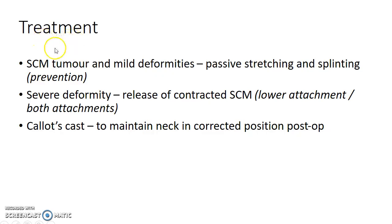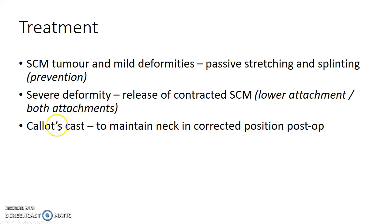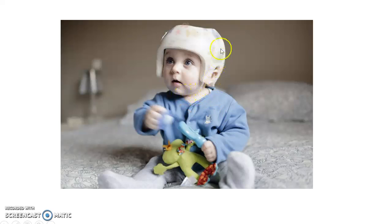For treatment of congenital Torticollis: when the child presents in the first few weeks of life with a sternocleidomastoid tumor or with mild deformities, passive stretching and splinting can help prevent severe deformities. When the child has already developed severe deformity, release of the contracted sternocleidomastoid is done — either at the lower attachment or both attachments of the muscle. After surgery, a Calot's cast is used to maintain the neck in the corrected position. This picture shows a child who has been operated for congenital Torticollis and is currently wearing a Calot's cast.